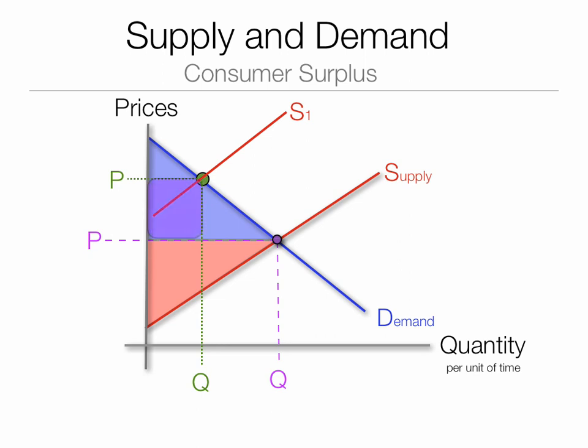The purple area is the area that shifts from consumer surplus to producer surplus. And once they capture all this market — these people that would be willing to pay high prices — what they begin to do then is increase their supply, and it becomes at a market level.